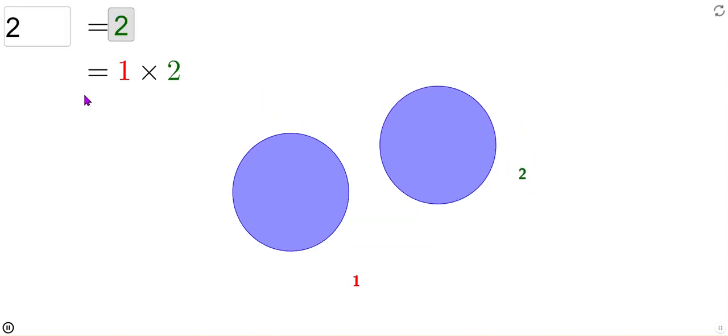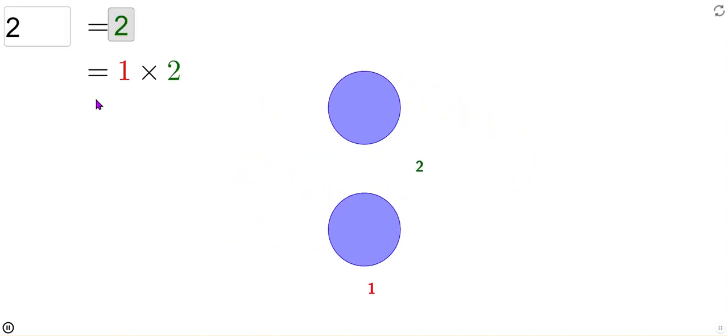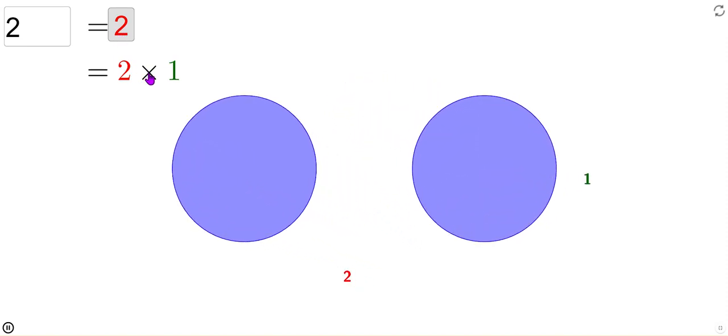Let's look at two. Two can be arranged as a row or as a column, but it cannot be arranged as rows and columns. So it cannot be written as the product of two other numbers. That makes two a prime number.